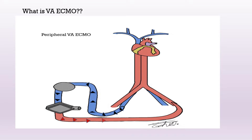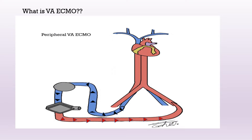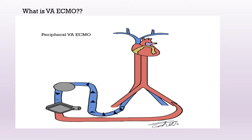We have two types of VA ECMO. The first is peripheral VA, where the venous drainage cannula is in the femoral vein, extended into the junction between the inferior vena cava and right atrium. The arterial or return cannula is in the femoral artery, extended into the abdominal aorta.